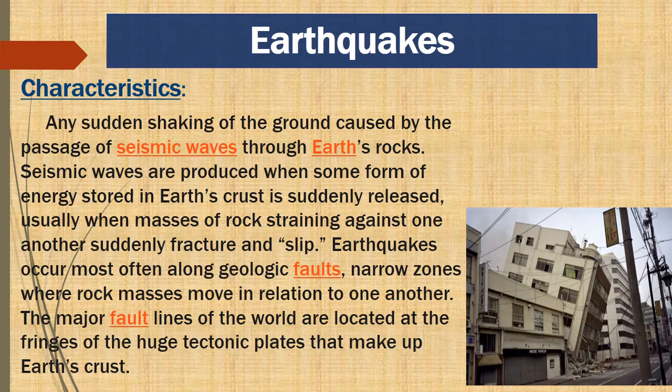The second topic is earthquakes. The sudden and intense vibration of the earth's crust is called an earthquake. It cannot be predicted as there are no pre-occurring symbols. Earthquakes can destroy human settlements, buildings, and infrastructure, badly affecting the living conditions of humans and animals.